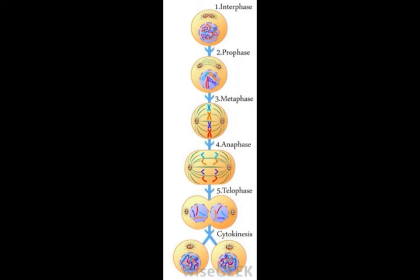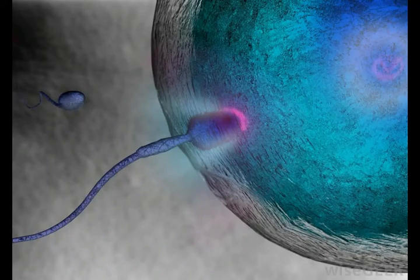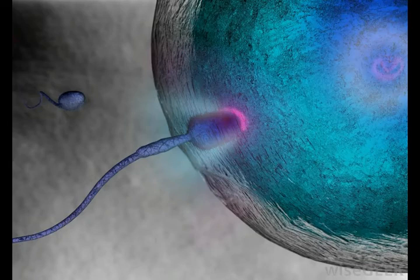Interphase, which is not part of mitosis, is a preparatory stage during which the parent cell makes a copy of its genetic material so that each daughter cell can have a complete set. Therefore, mitosis is an ongoing and repetitive process, alternating with interphase.